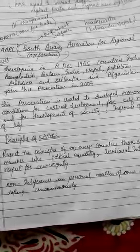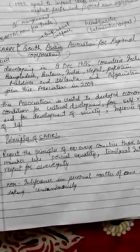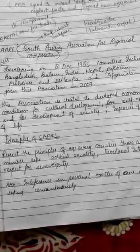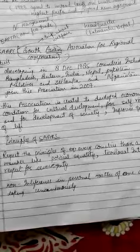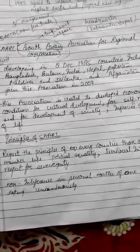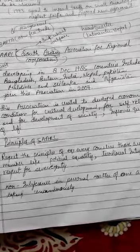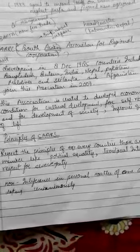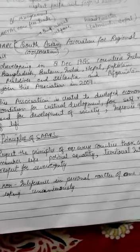Seven countries were involved as part of this association. These countries are Bangladesh, Bhutan, India, Nepal, Pakistan, Maldives, and Sri Lanka. After that, Afghanistan joined this association in 2007. Now they are working as an association for the cooperation of these countries for welfare and development programs.